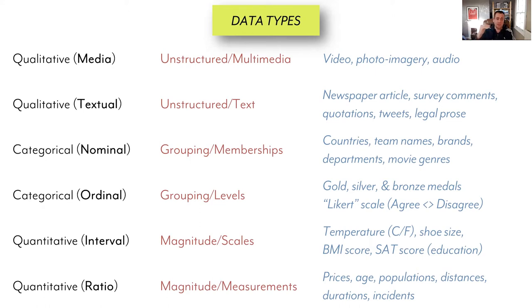Qualitative, categorical and quantitative. Within qualitative, there are subtle differences — for example, qualitative media. So when you've got the possibility of working with data that's unstructured, such as videos, photo imagery, audio, music. Unstructured text may be in written form, such as articles, survey comments, quotations.